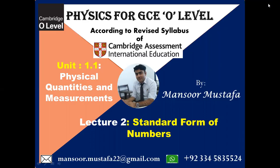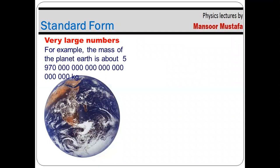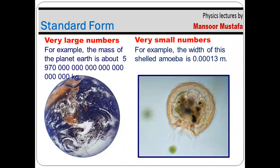When we talk about measurement, sometimes we deal with very large numbers, like the mass of Earth, or sometimes we deal with very small numbers, like the width of a shell amoeba. These numbers contain a large string of digits, so writing or representing them is difficult and there are chances of error — a single digit might be missed, giving an inaccurate result. To avoid this, there is a method to write these numbers in a short form, called the standard form of numbers.